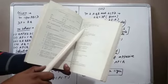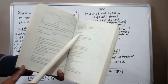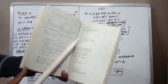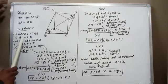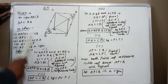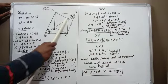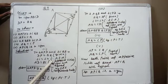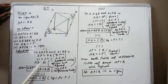We want to prove five parts: first, triangle APD is congruent to triangle CQB; second, AP equals CQ; third, triangle AQB is congruent to triangle CPD; fourth, AQ equals CP; fifth, APCQ is a parallelogram. For the first part, in triangles APD and CQB: DP equals BQ (given); angle 1 equals angle 4 (alternate interior angles); AD equals BC (opposite sides of parallelogram). By SAS congruence, triangle APD is congruent to triangle CQB, so AP equals CQ by CPCT.